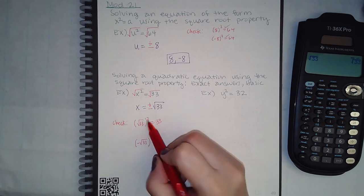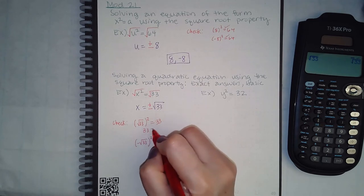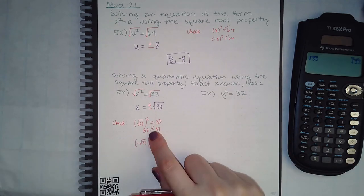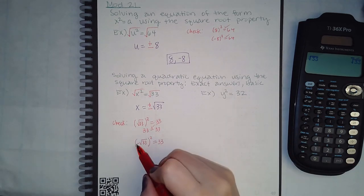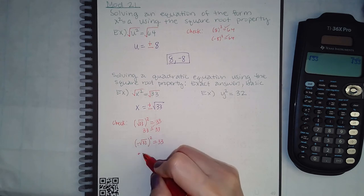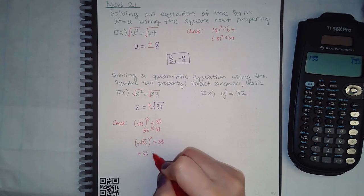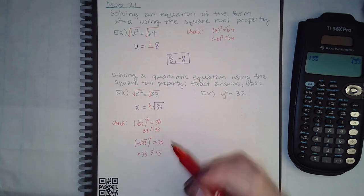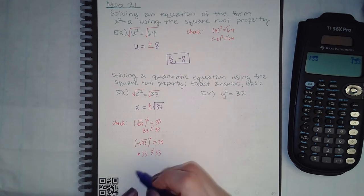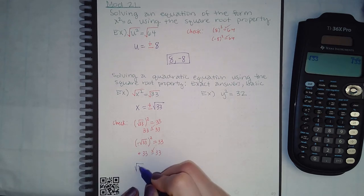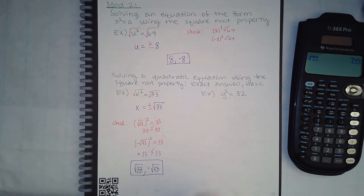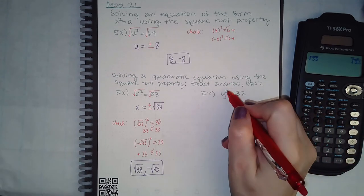The square root and the square cancel each other. A negative times a negative is positive, and the square root cancels the square, giving positive 33, which equals positive 33. So both check out, meaning positive square root of 33 and negative square root of 33 are both solutions.